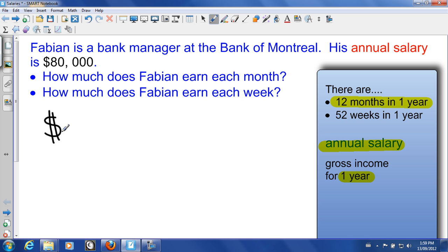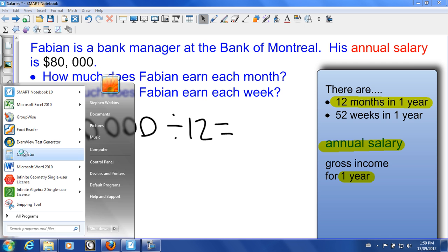$80,000 divided by 12. What does that give us? Let's pull out our calculator and find out.